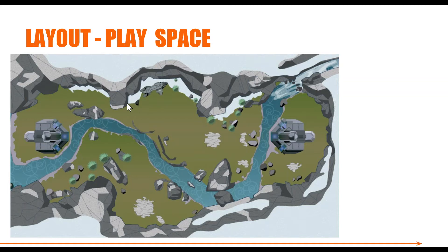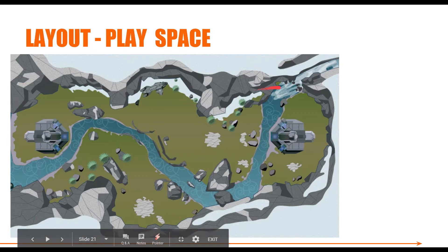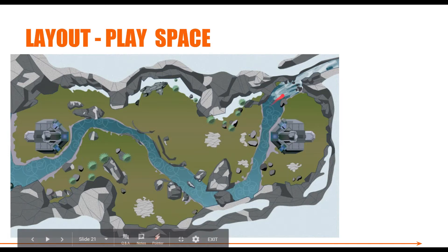Take a look at the overall map we've got here. The green space is the gameplay area — that's where the gameplay happens. That's where the player can get to and has access to.